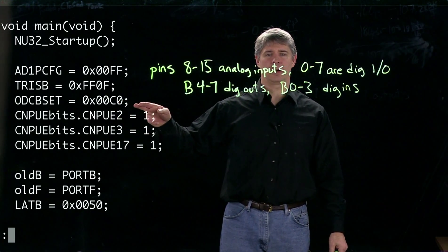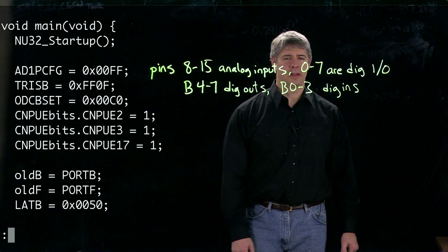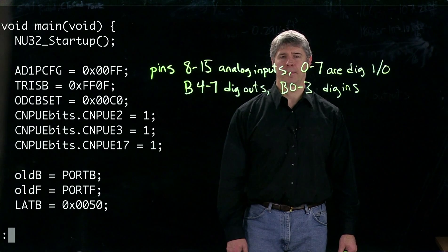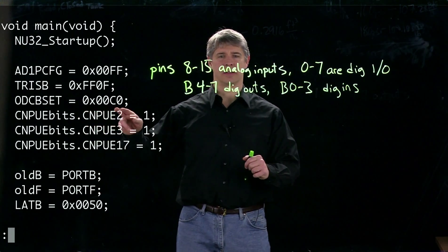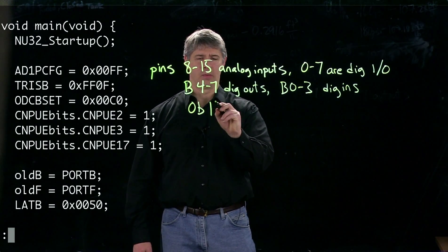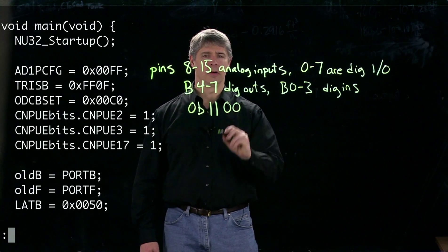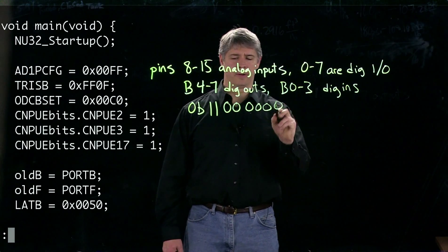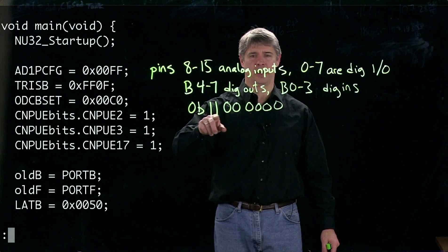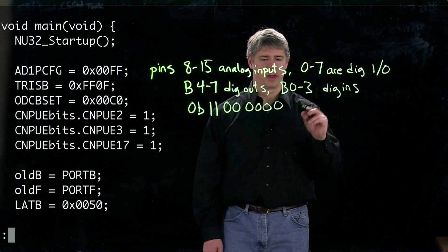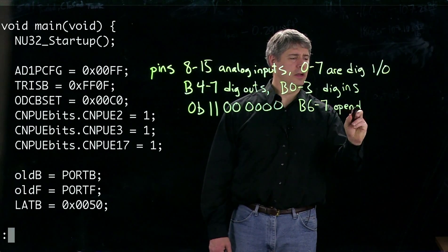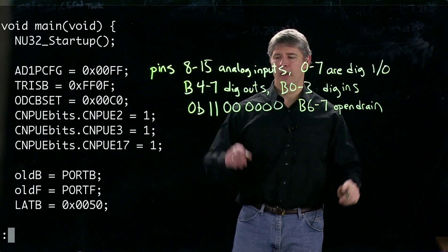This next command sets some of the outputs to be open drain. This hex value we can write in binary as 0b11000000. Since bits 6 and 7 have a 1, they are configured as open drain. So B6 to 7 are open drain digital outputs.